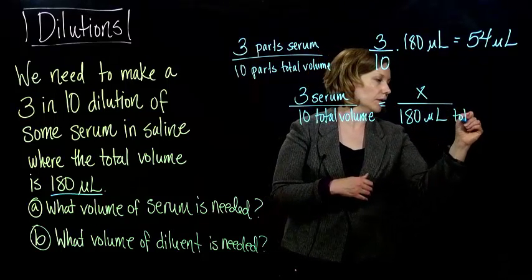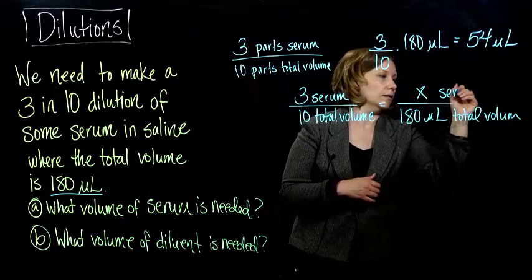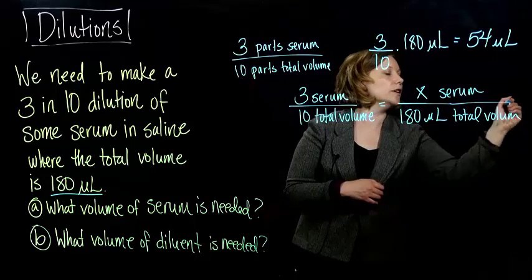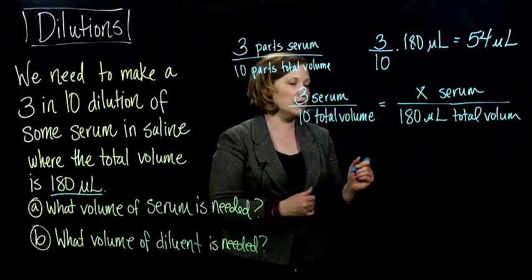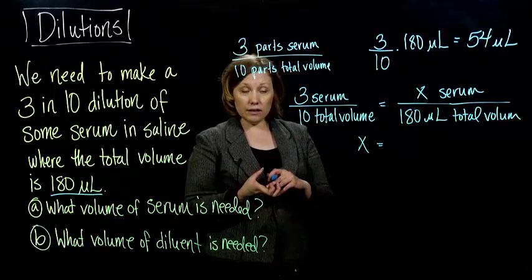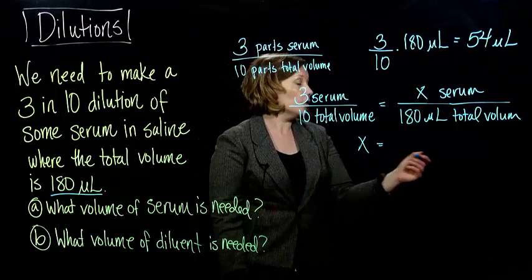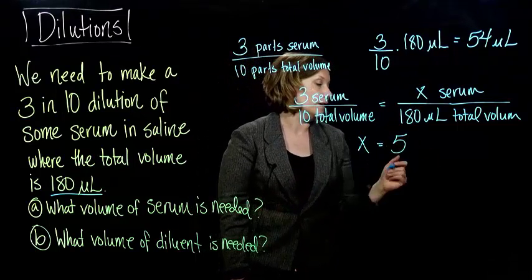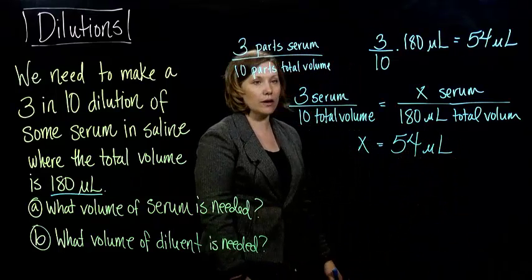And we don't know the parts serum, and if you notice, based on our last section, the units, all these serum and total volume is going to cancel, and when you solve this, just like we did in the algebra chapter when we were reviewing our algebra, you will get the same thing we got above, x equals 54 microliters. Everything will work out nicely.